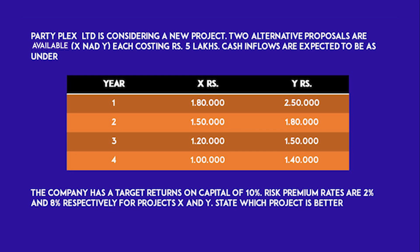Analyzing the question: Partiplex company has two projects, X and Y, with an initial investment of rupees five lakh each. The company has a target return on capital of 10%. The risk premium rate is 2% for Project X and 8% for Project Y. We need to recommend which project is better.